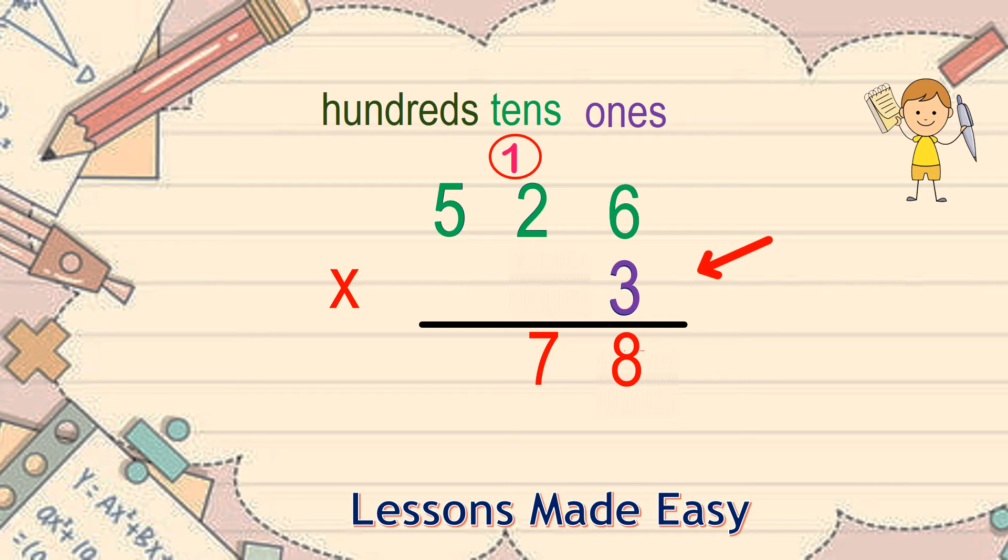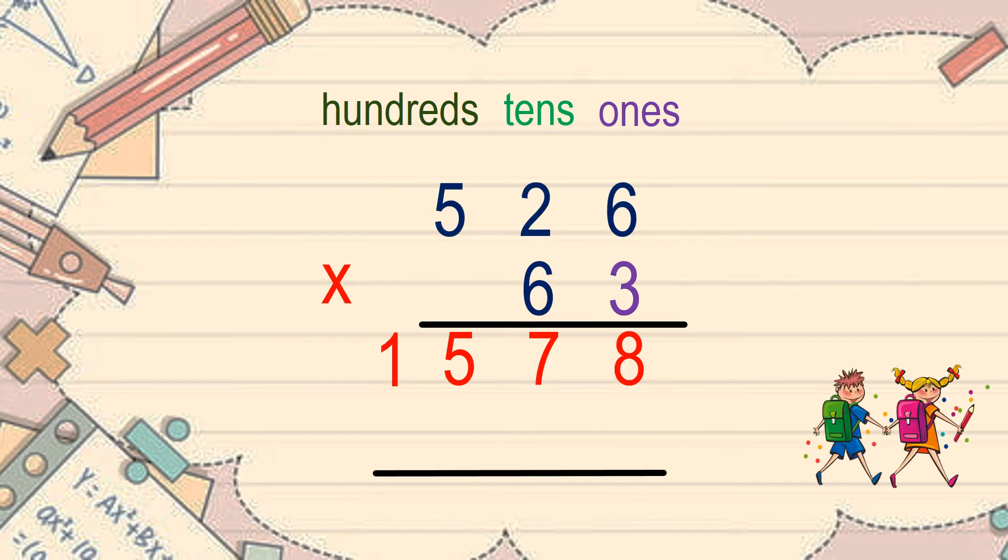Next, 5 times 3 is 15. So we keep 5 and carry over 1. But because there isn't any other digit to multiply, simply bring 1 down. We're done with 3.